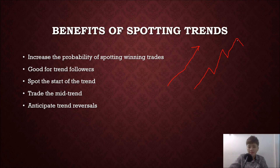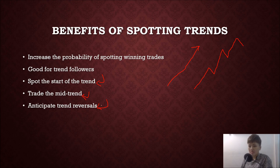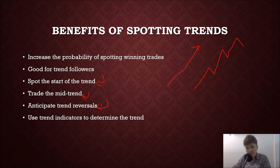Different stages of the trend — the start, the middle, and the end — require different indicators and strategies. For example, if you want to spot trend reversals, you use a strategy like a breakout below the trend line, or you can use divergence, which I'll share later. If you're a trend trader, you're going to learn how to use trend indicators to determine whether you're trading a bullish trend, bearish trend, or a sideways market.